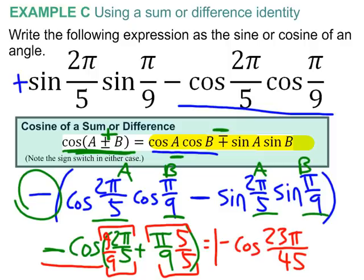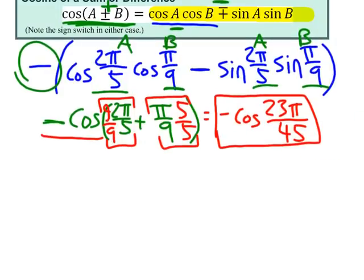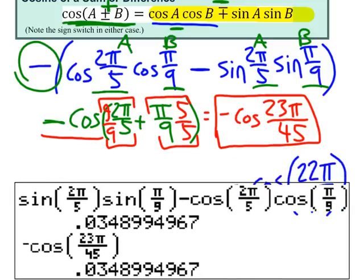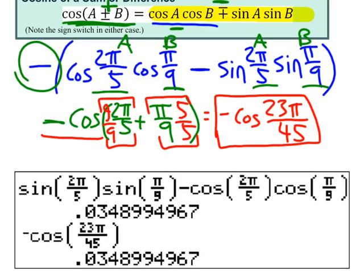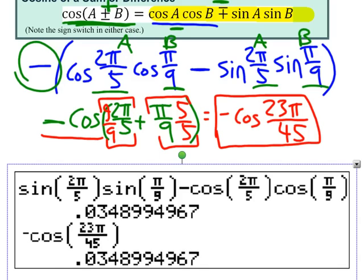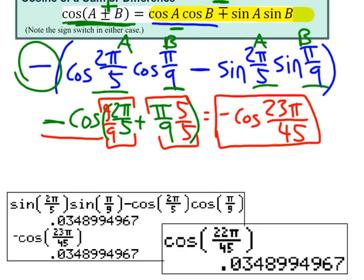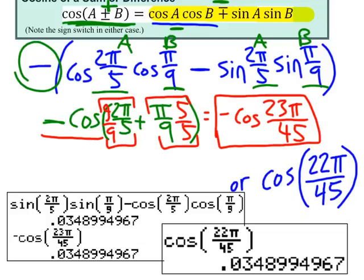So, I'm going to be satisfied with saying that that is a valid final answer. We could check that in a calculator. And, for those who are interested in a challenge, once again, I'll ask you if you can prove that that's also the same as positive cosine of 22 pi over 45. Again, I could show here that typing it into a calculator that our original final answer does work. But, I'll also show you that cosine of 22 pi over 45 also works. And, again, for those who are up for a challenge, see if you can prove that that red boxed answer is the same as this blue boxed answer. Alright?